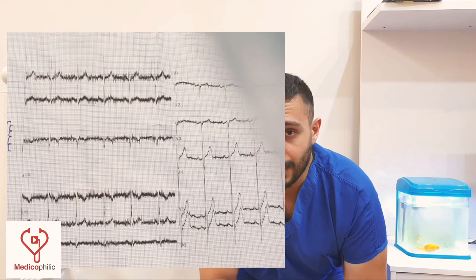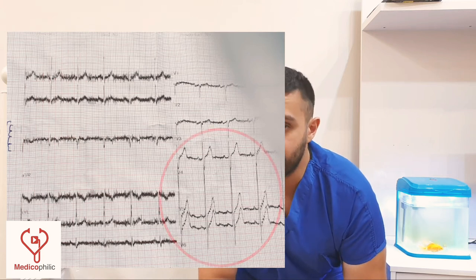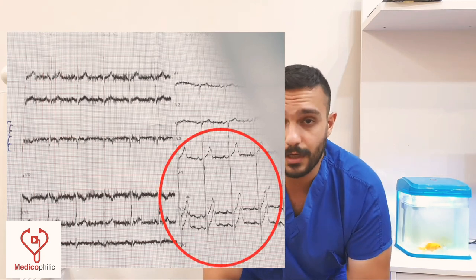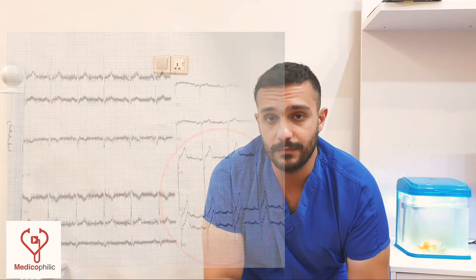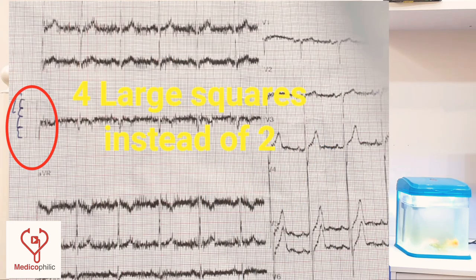The ECG you see now may give you a picture similar to left ventricular hypertrophy, a picture similar to ST elevation MI, or peaked T wave. But if you pay attention to the calibration, you will see that the calibration height is higher than the standard measurement. If you don't pay attention to the calibration, you may reach a false diagnosis.